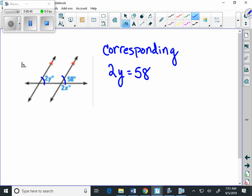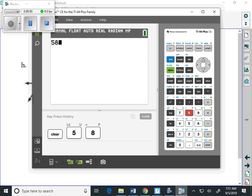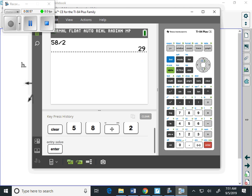2y equals 58, and if we divide both sides by 2 to undo the multiplication, we're going to get our value for y. And don't forget, decimals, calculator, whatever works for you, gives us 29.